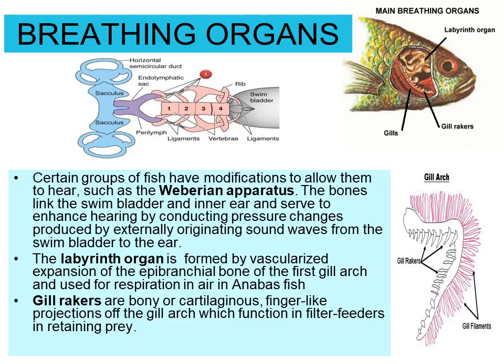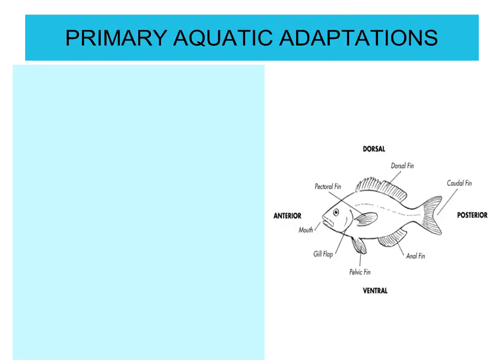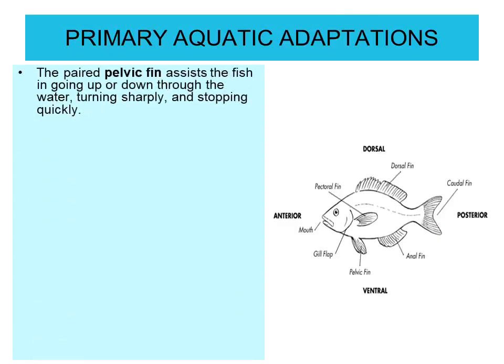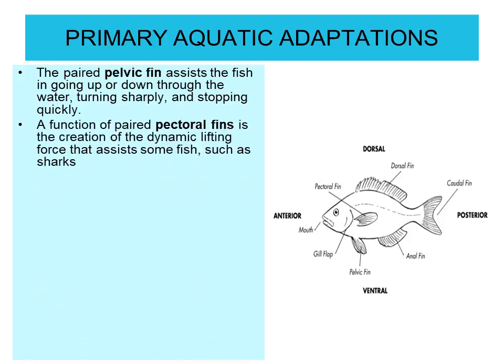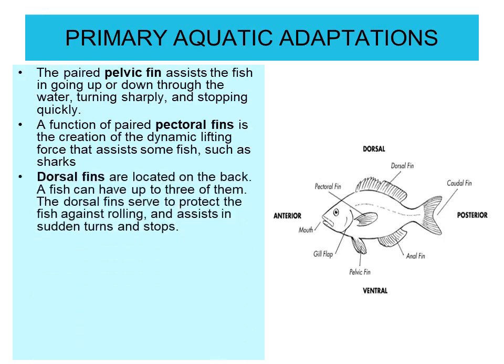Gill rakers are bony or cartilaginous finger-like projections of the gill arch which function in filter feeders in retaining food. Primary aquatic adaptations also include various types of fins. The paired pelvic fins assist the fish in going up and down through water, turning sharply, and stopping quickly. The function of paired pectoral fins is the creation of dynamic lifting force that assists some fish such as sharks.